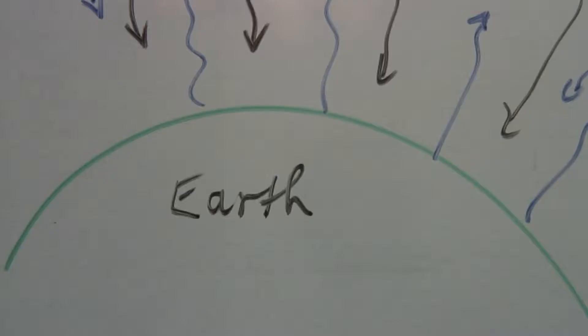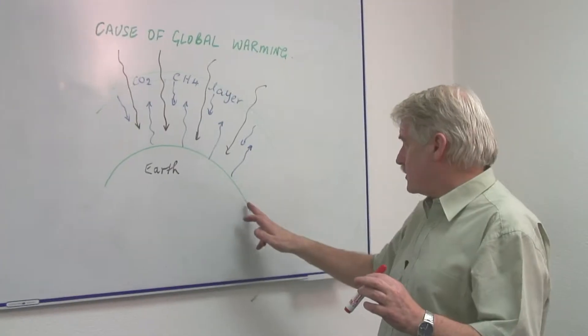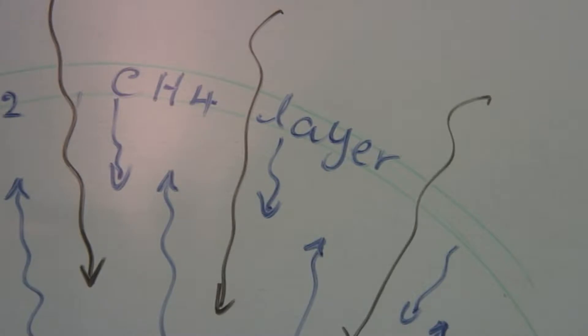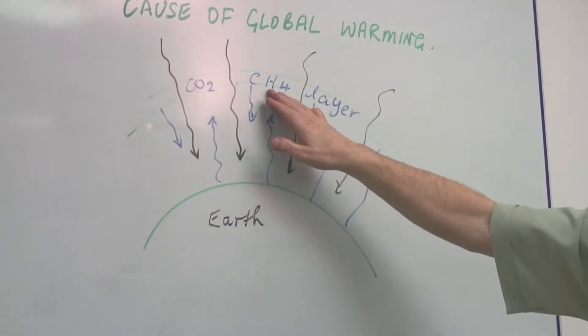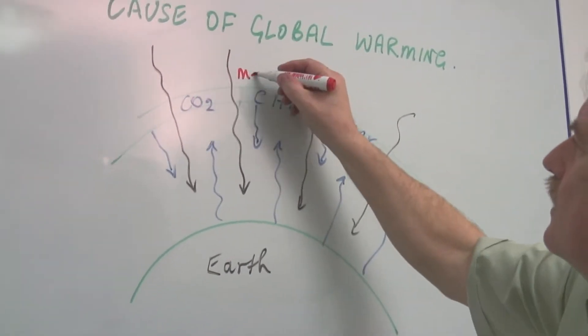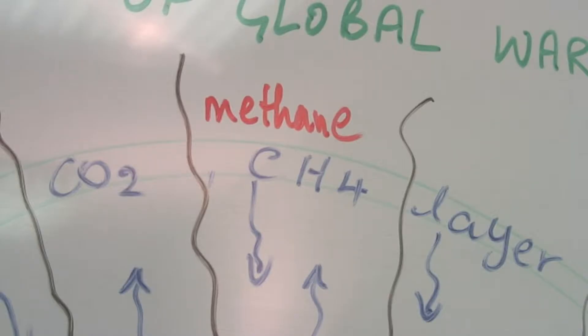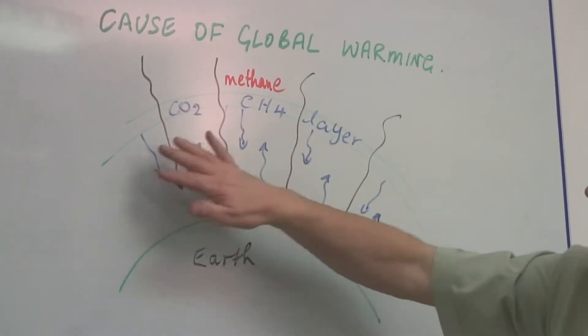We have the earth here and there's the earth surface and we have this layer here which is a layer of gases like carbon dioxide and methane. CH4 is methane and these gases have the effect of cushioning the earth.